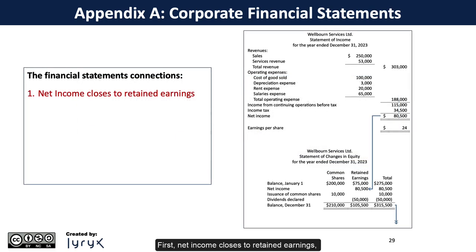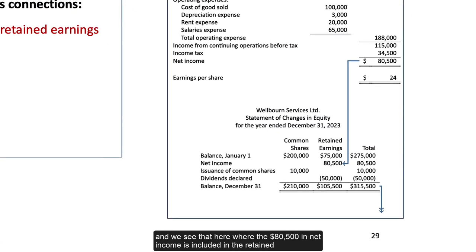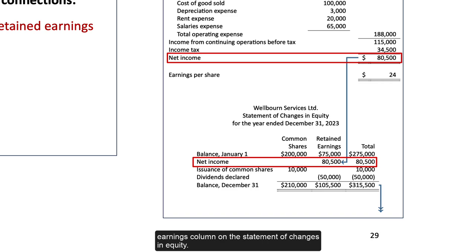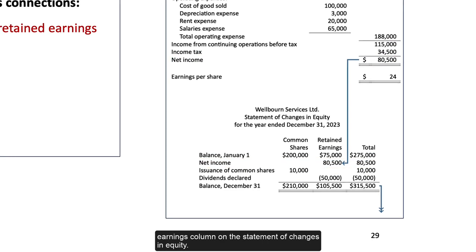First, net income closes to retained earnings. We see that here where the $80,500 in net income is included in the retained earnings column on the statement of changes in equity.